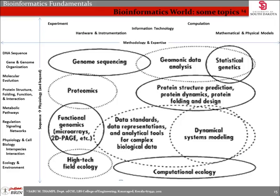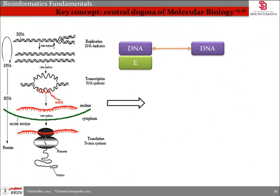Now we can clearly see the relationship between major disciplines such as biology and informatics. Statistical genetics falls under gene and genome organization biologically, as well as mathematical and physical models in an informatics sense. We can also see how an understanding of all base disciplines is necessary to grasp bioinformatics. Biologists propose two key tools when looking in this direction: the lactose operon can be used to detail the mechanism of gene expression, and the central dogma of molecular biology can be used to understand interactions of genetic materials.